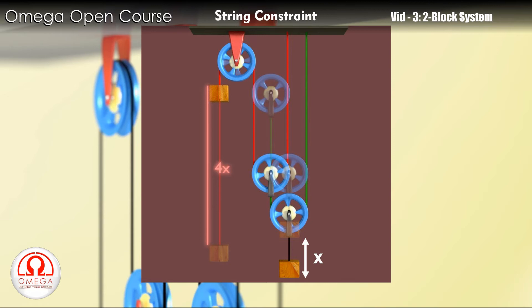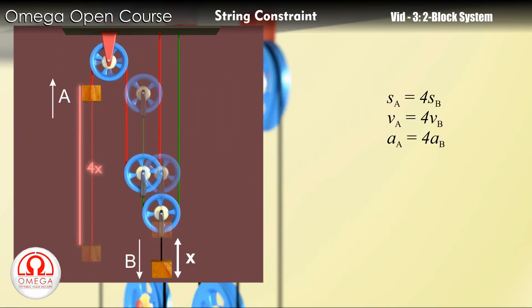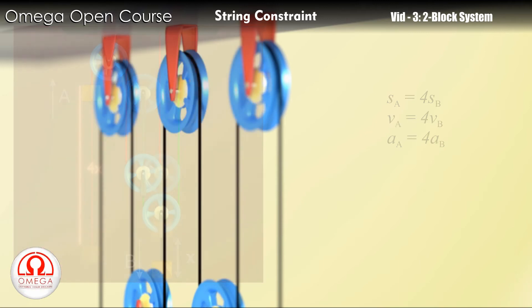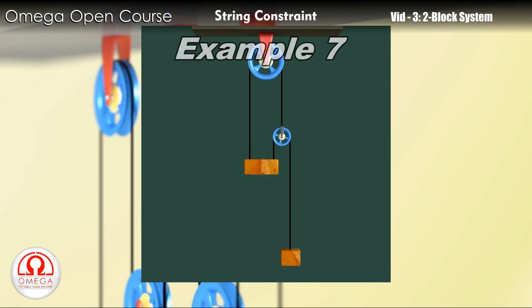Hence, the magnitude of displacement, velocity, and acceleration of the block on the right is 4 times that of the block on the left. Consider another example.